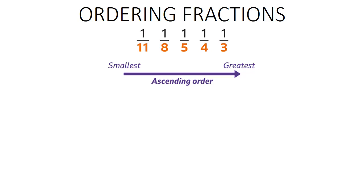For instance, in the first subject the score is 1 over 11, in the second subject 1 over 8, then 1 over 5, 1 over 4, and 1 over 3. When numerators are the same, you need to find out how many questions were missed. The more questions you miss, the lower your score. Remember, you can only use this analysis for same-numerator fractions.